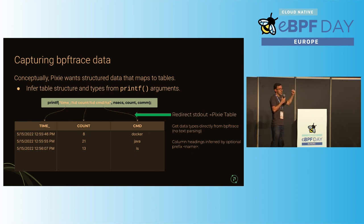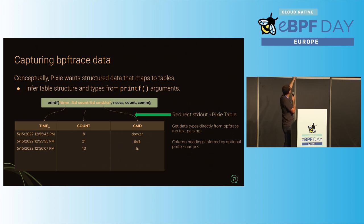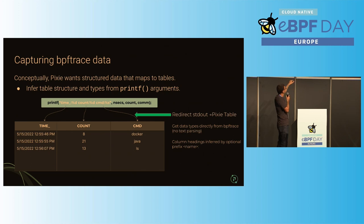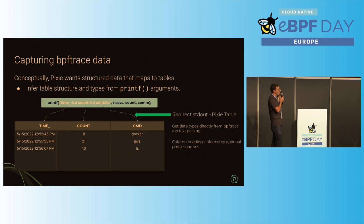Conceptually, we want to capture the data coming out from printfs in BPF Trace. For example, if you have a printf with three arguments — time, count, and command — what we infer is that there should be three columns. We create a table with three columns. If you put optional labels in front of the format specifiers, we'll automatically label the columns for you: first column is time, second is count, third is command. Every time the printf triggers, these events get sent to Pixie and populate the automatically created table.